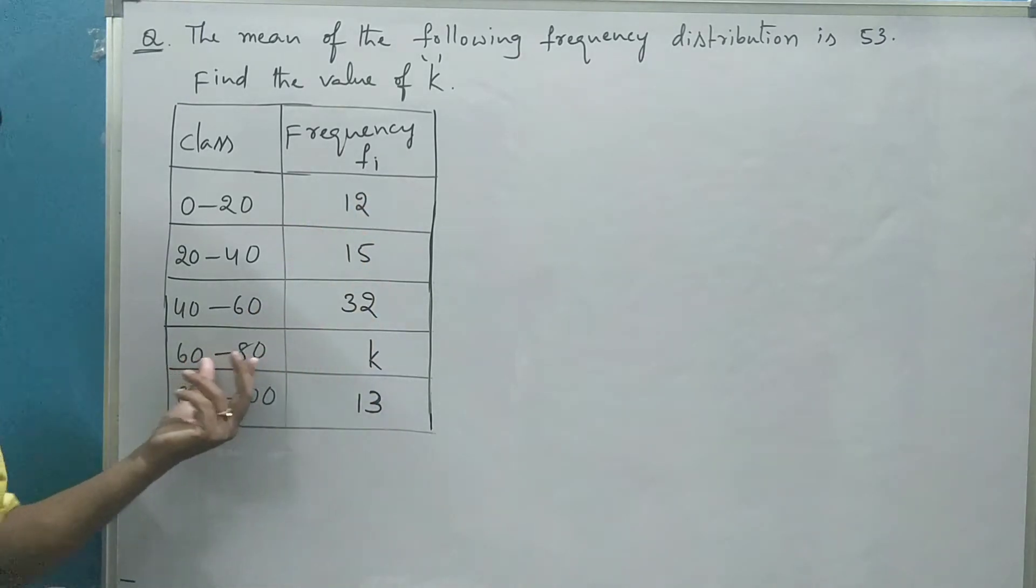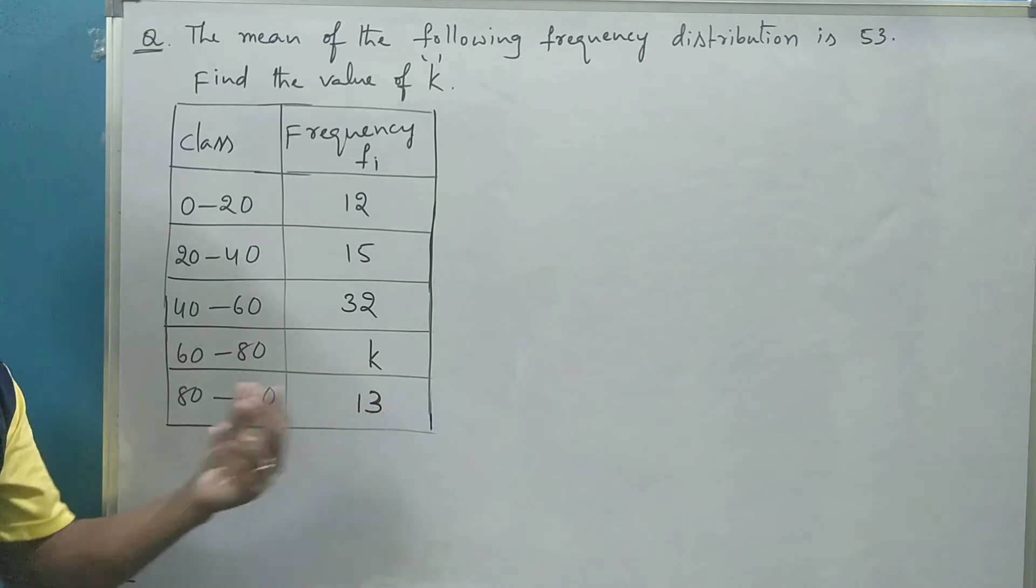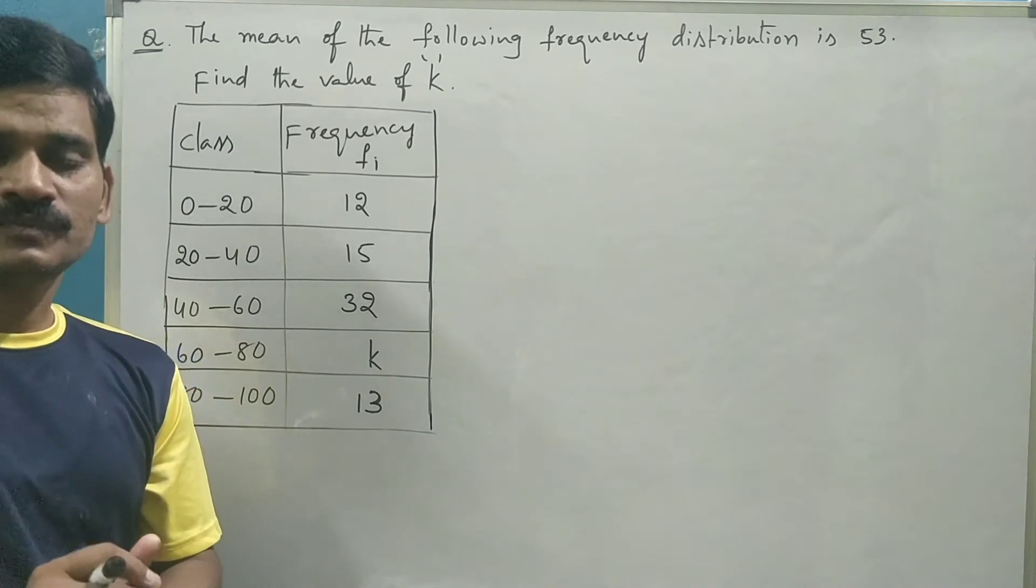15, 32. For this class interval, frequency is missing. And last frequency is 13. Now I am going to solve this problem with direct method.